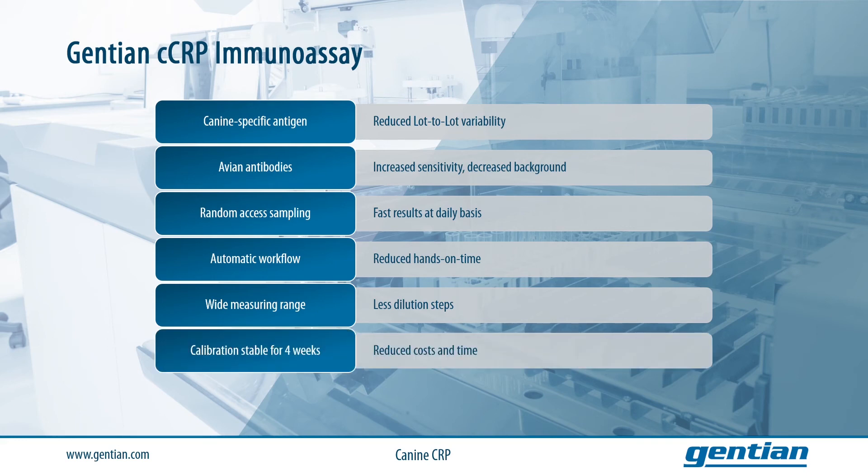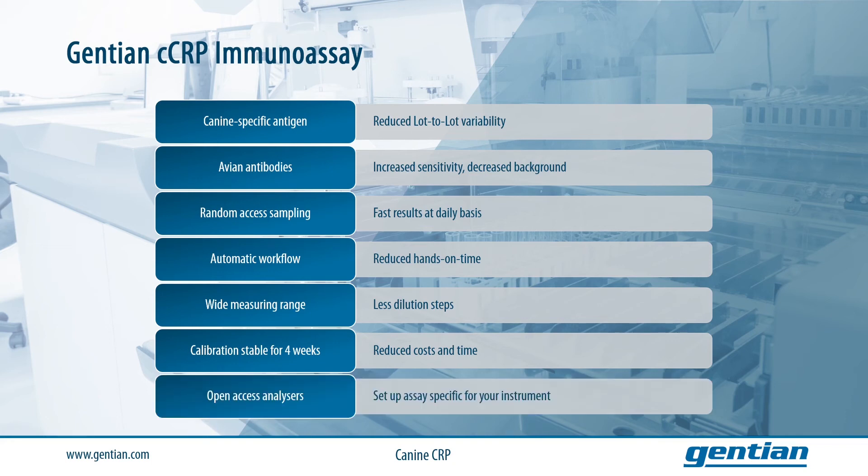The calibration is stable for four weeks, resulting in reduced cost and time for recalibration. Finally, it is important to note that the Gentian canine CRP immunoassay is suitable for all open access analyzers, so you can set up the assay on your own specific instrument.